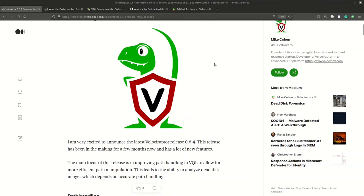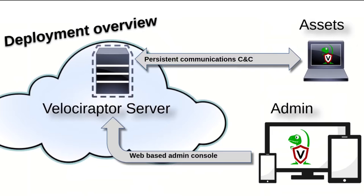Welcome back everyone. Today we're going to talk about Velociraptor, an endpoint visibility tool. This tool lets you set up a server and a bunch of clients that are on your network, and then you can monitor and respond to incidents on each of those clients through a centralized server.